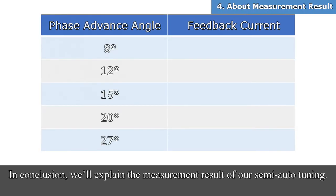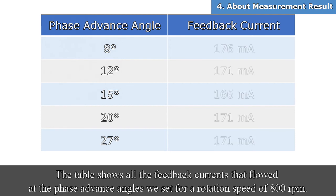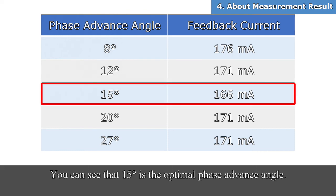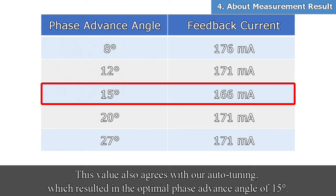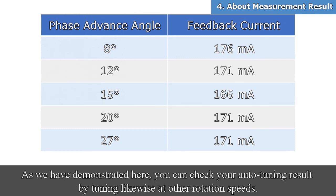In conclusion, we'll explain the measurement result of our semi-auto tuning. The table shows all the feedback currents that flowed at the phase advance angles we set for a rotation speed of 800 RPM. You can see that 15 degrees is the optimal phase advance angle. This value also agrees with our auto-tuning, which resulted in the optimal phase advance angle of 15 degrees. As we have demonstrated here, you can check your auto-tuning result by tuning likewise at other rotation speeds.